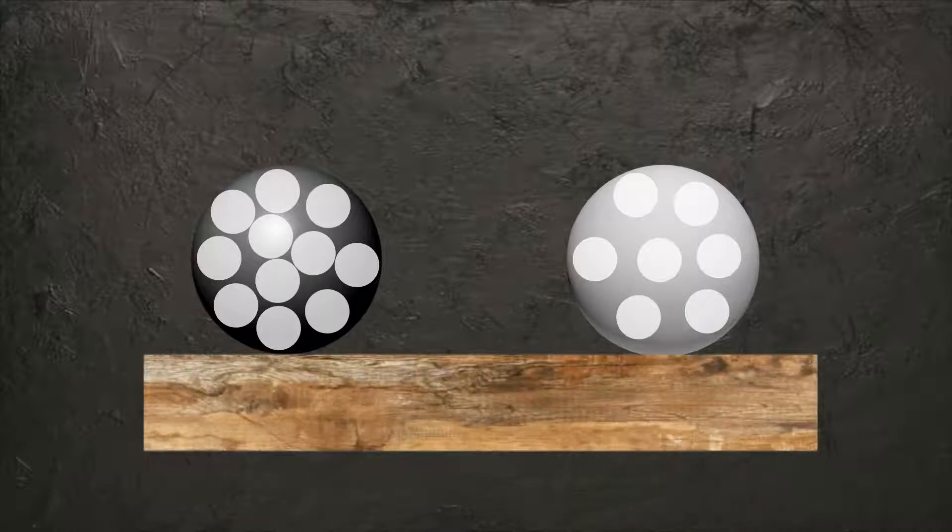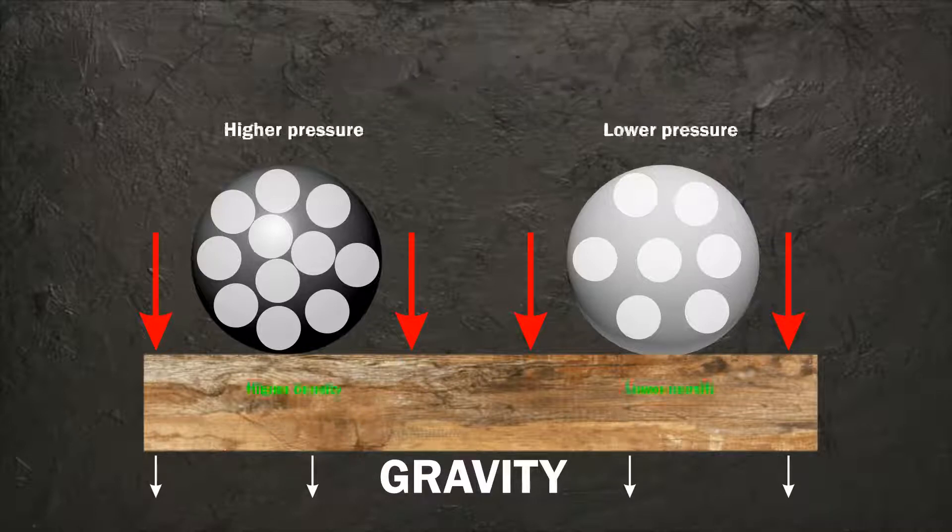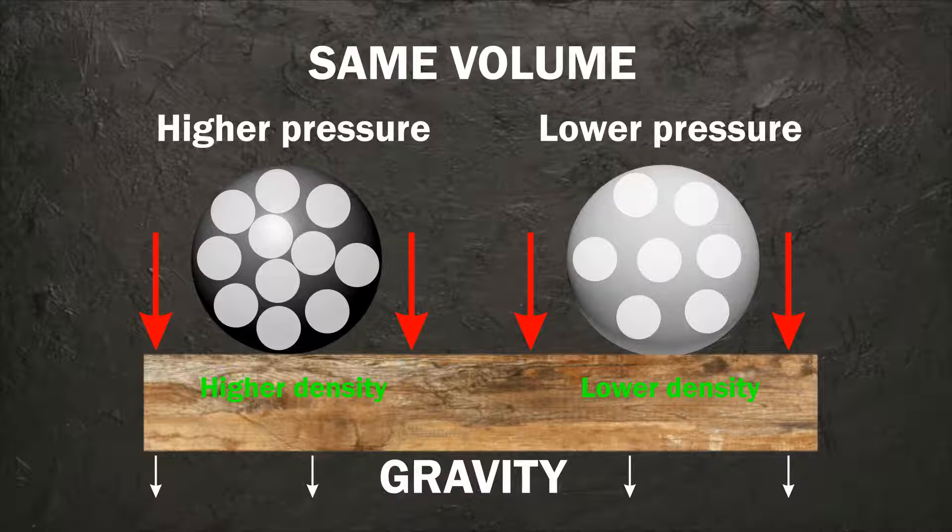We know that every object with mass exerts pressure because of gravity. A higher density object causes higher pressure compared to a low density object, given that both objects have the same volume.